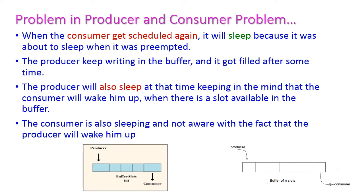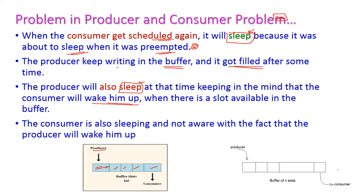When the consumer gets scheduled again, it immediately calls the sleep system call because it was about to sleep when it was preempted. Meanwhile, the producer keeps writing to the buffer continuously until the buffer is completely filled. Once the buffer is full, the producer also goes to sleep, thinking the consumer will wake it up when a slot is available. But now both the producer and consumer are in sleep mode, neither aware that the other is also sleeping.